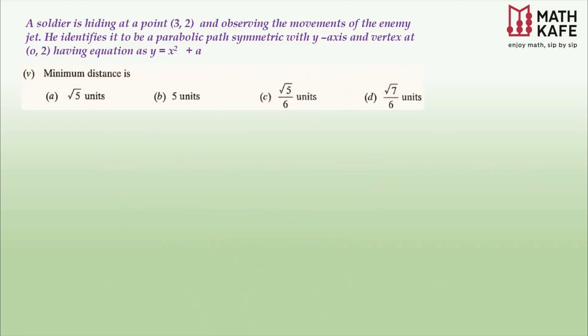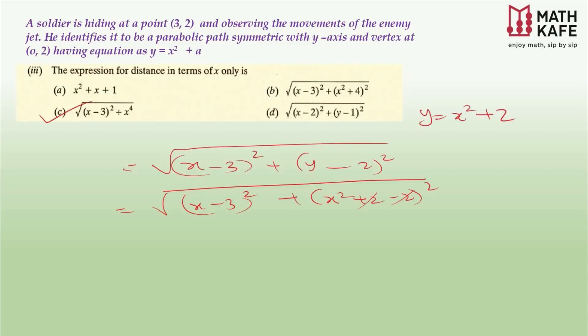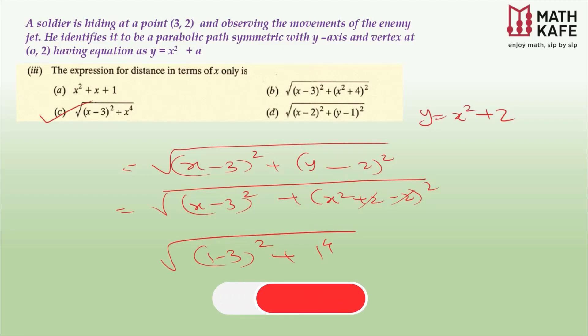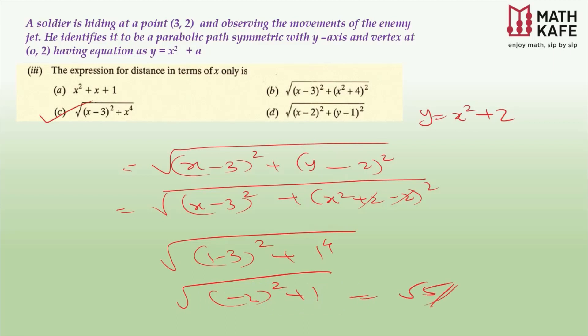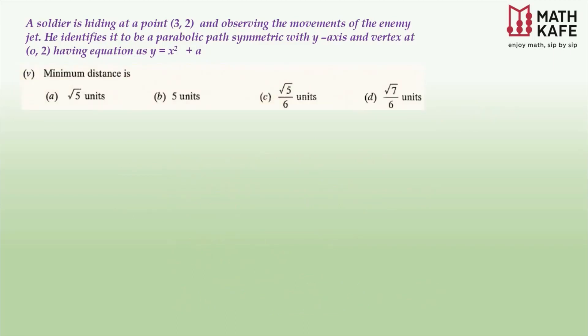The last part asks for the minimum distance. Substituting x = 1 into the distance formula: d = √[(1 − 3)² + 1⁴] = √[4 + 1] = √5. Checking the options — yes, the first option is √5 units. That is our answer. The key procedure for all maxima-minima application questions is: differentiate, set equal to zero, solve for the critical point, then substitute back.